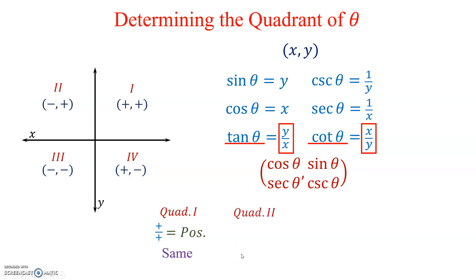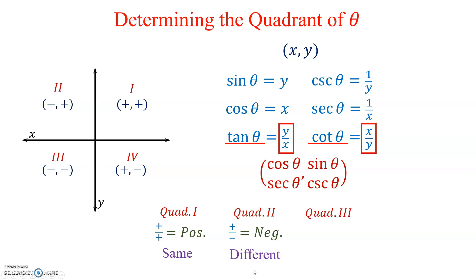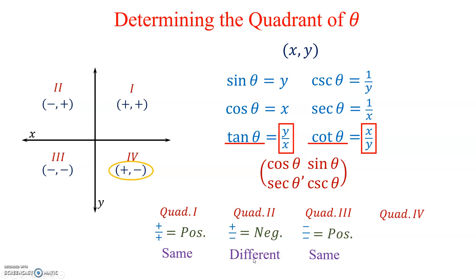In quadrant 3 the signs are negative/negative — both signs are the same — so negative divided by negative is still positive. In quadrant 4 the signs are positive/negative — the signs are different — so in this case negative divided by positive gives a negative.